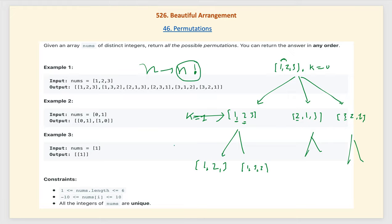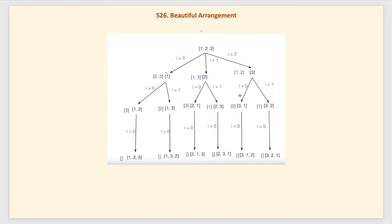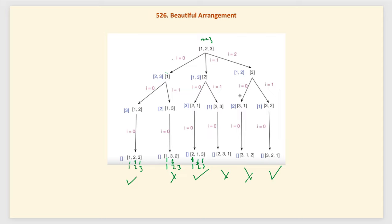Here is the full permutation tree for n=3, giving 6 possible permutations. Once we have the permutations, we check if each satisfies our rule. For [1, 2, 3] with indices 1, 2, 3: both divisibility rules are satisfied — this is a beautiful arrangement. Checking the others: some satisfy, some do not. Out of 6 permutations, 3 are beautiful, so we return 3 as our answer. Note that we only need to return the count, so there is no need to store the permutations.